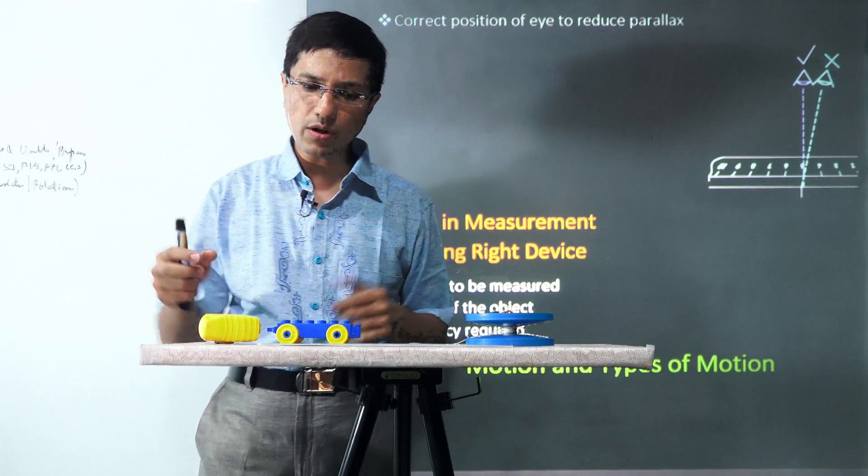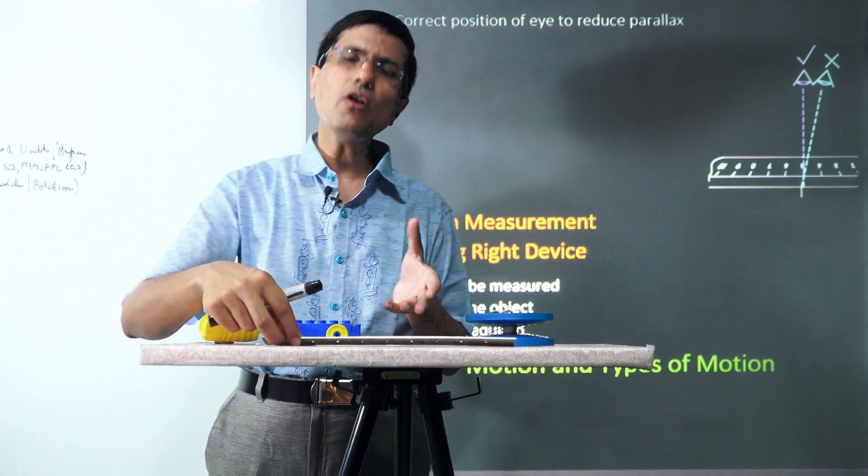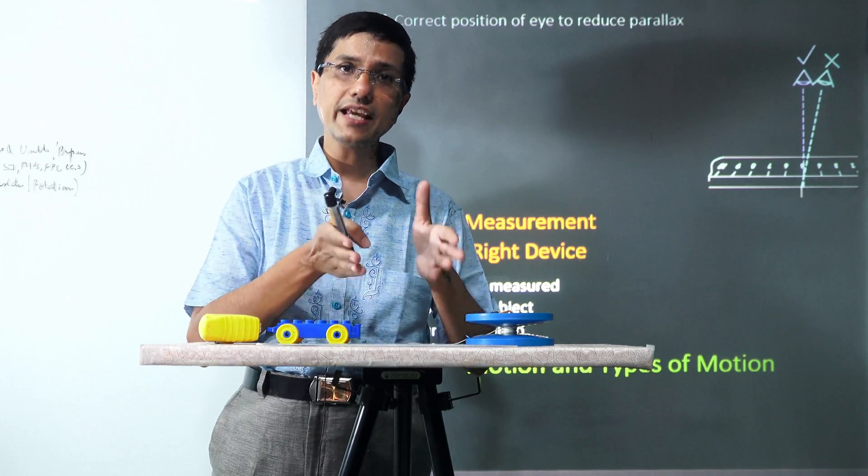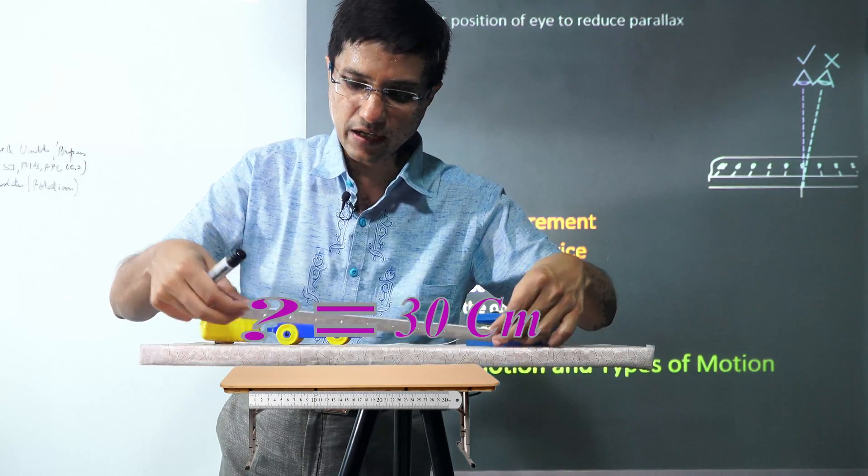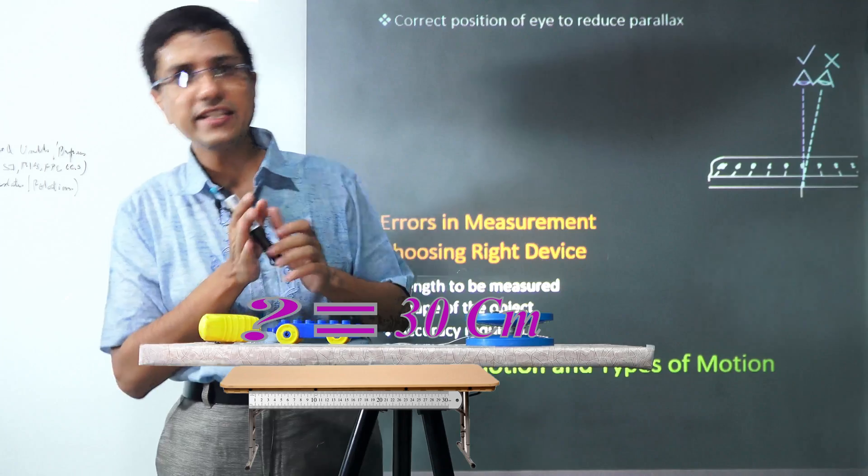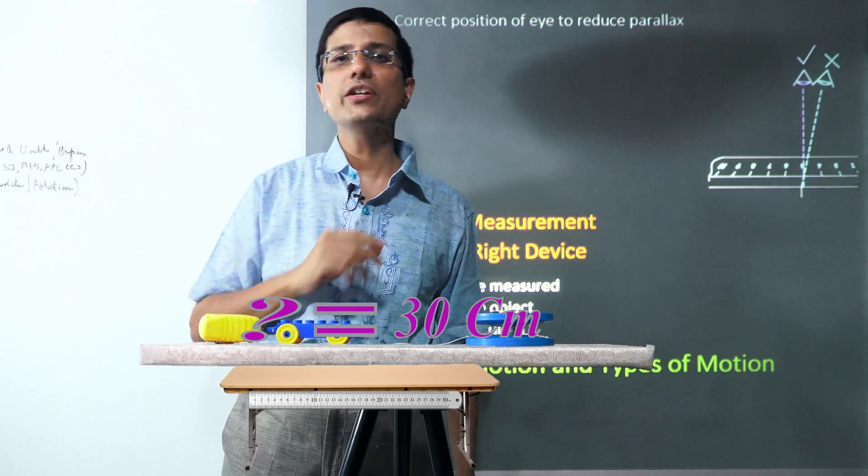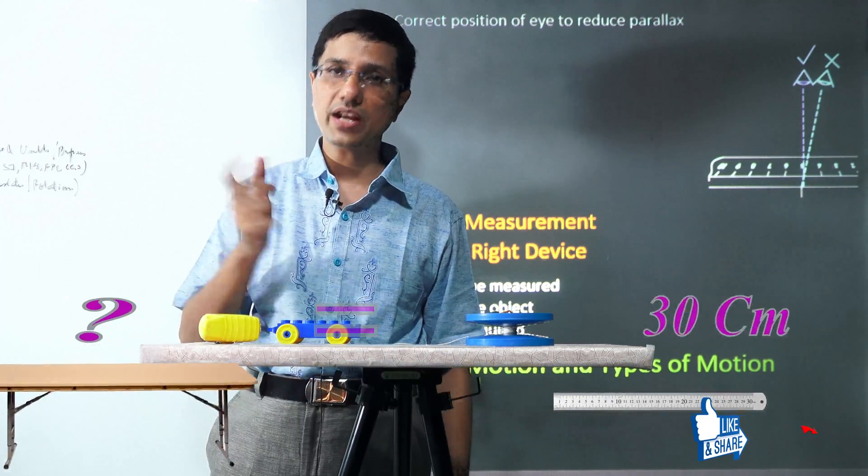The fourth thing we need to be careful about, especially when measuring length or other dimensions using an analog scale like this, is we have to take the readings from directly above. We should never read the scale from the sides, as that would introduce an error known as parallax.